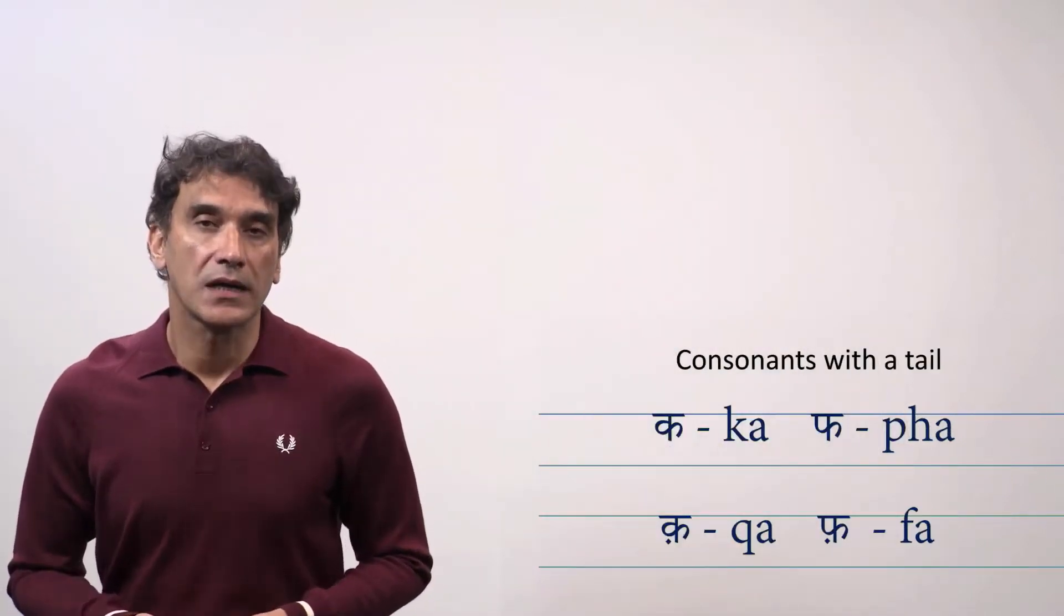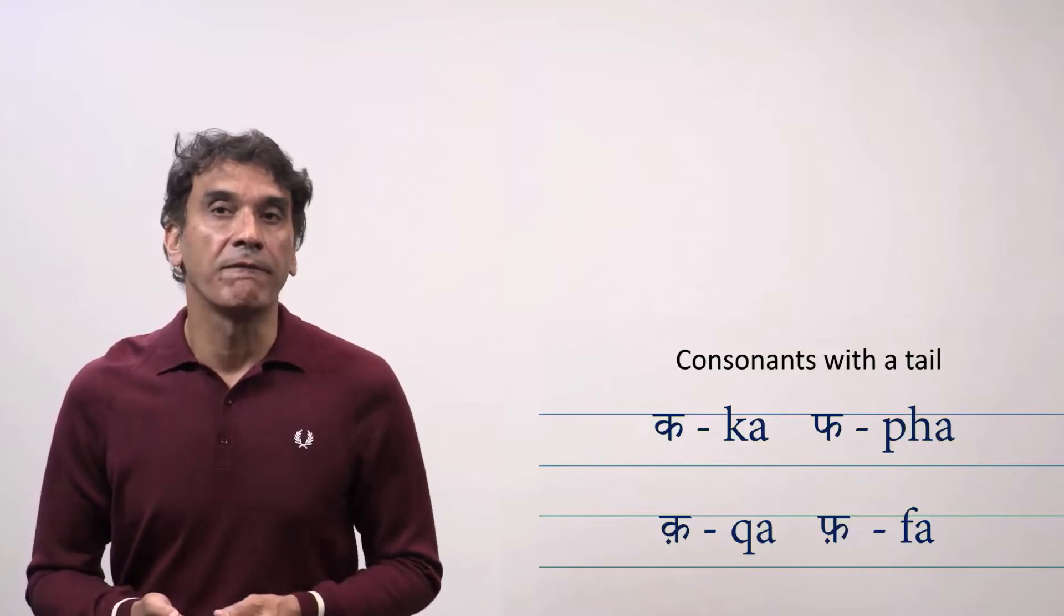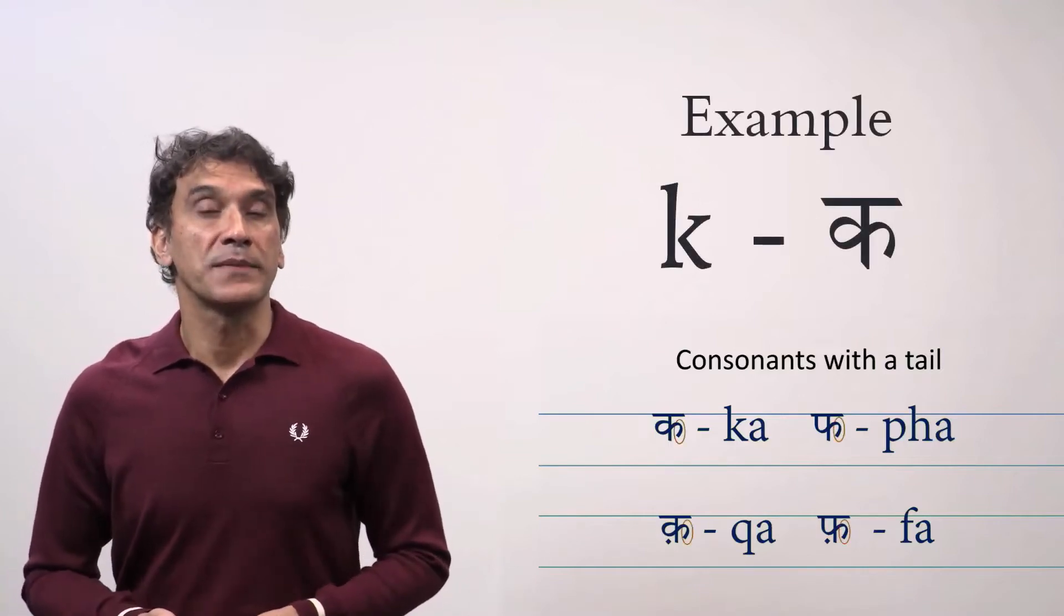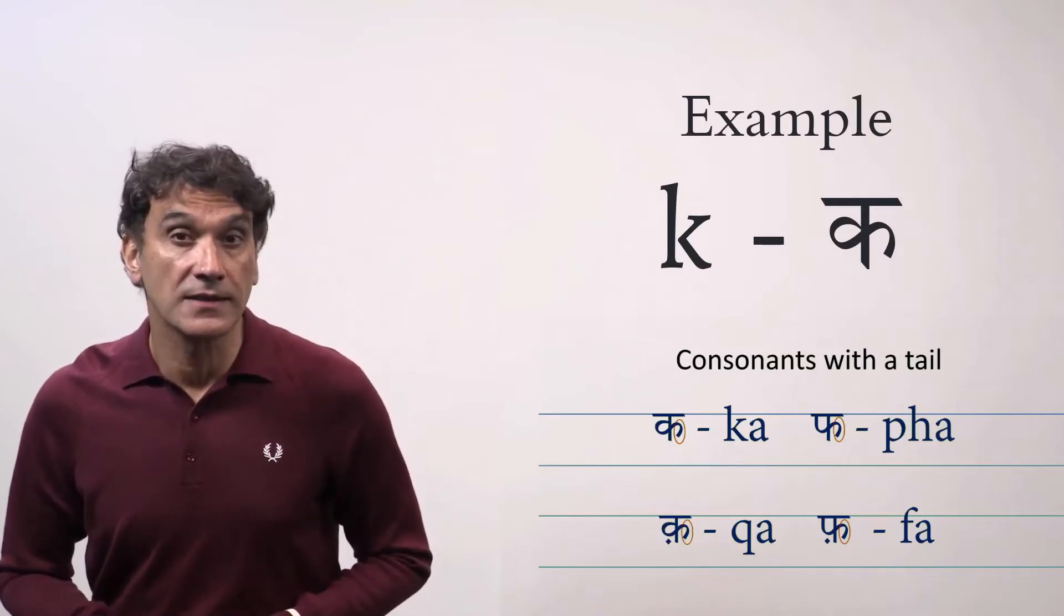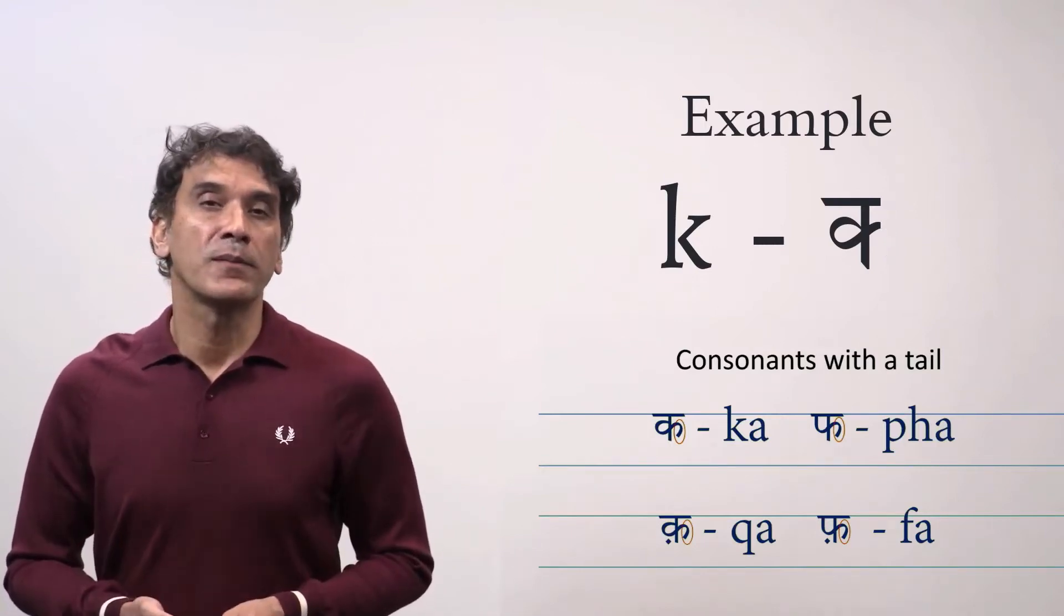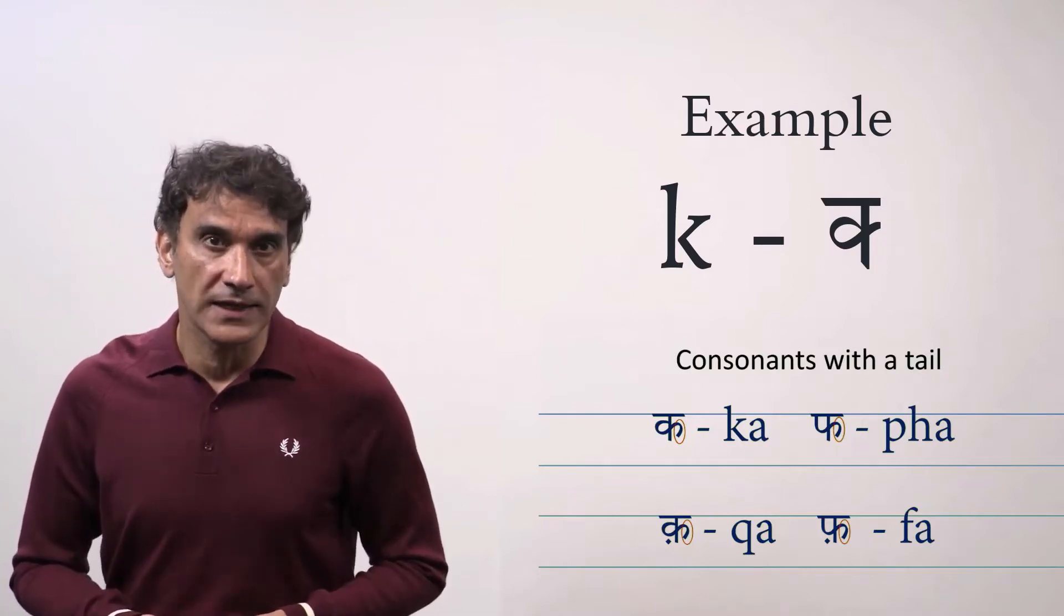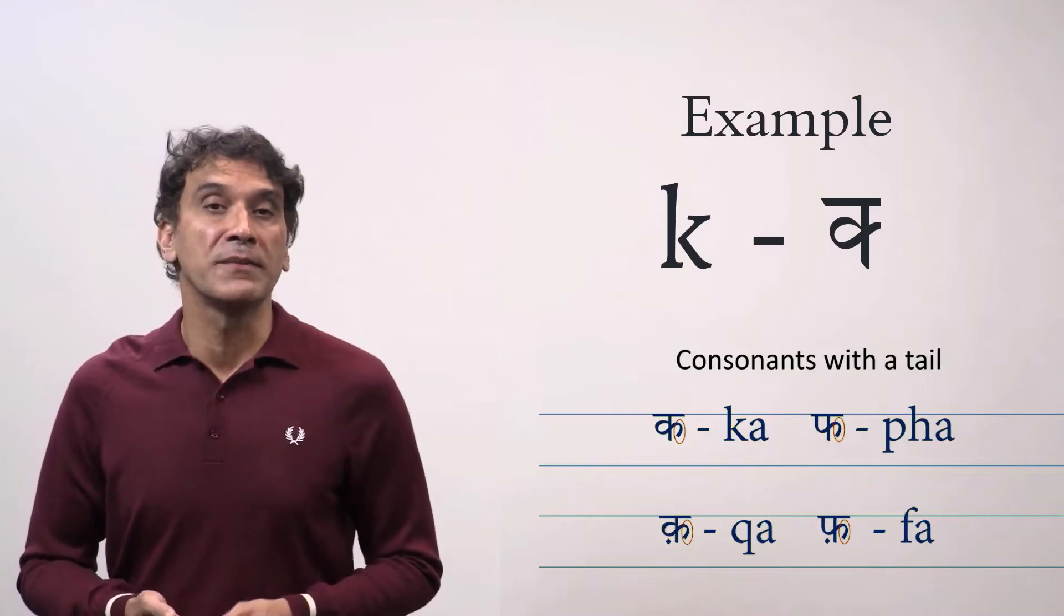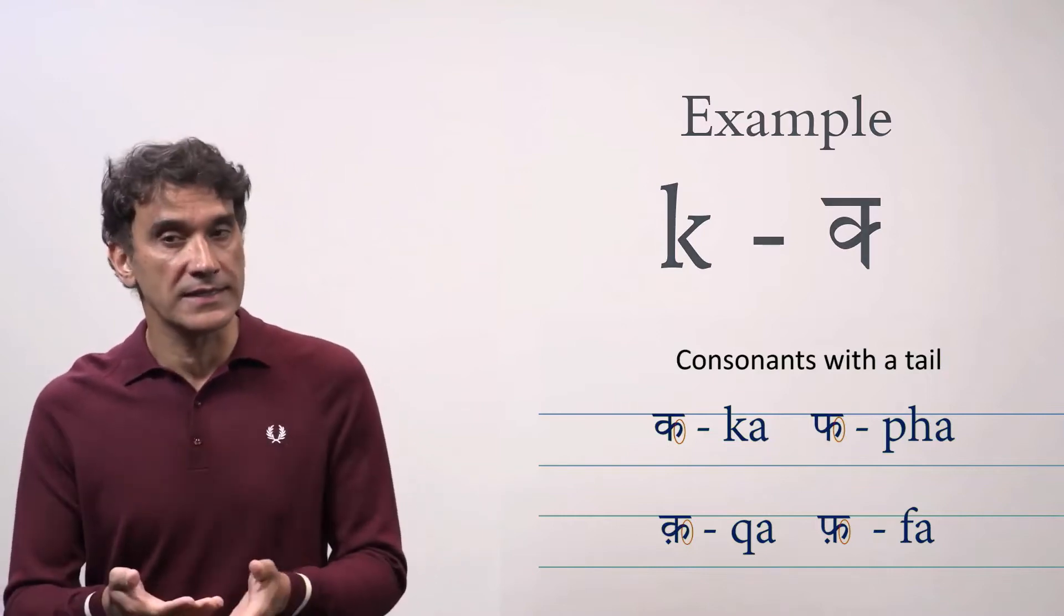The consonants have a tail. When these four letters come as the first part of the consonant cluster they are also cut into half. Their half letter form loses a significant part of the tail. The part shown here in the oval is chopped off and the remaining letter is connected to the next consonant.